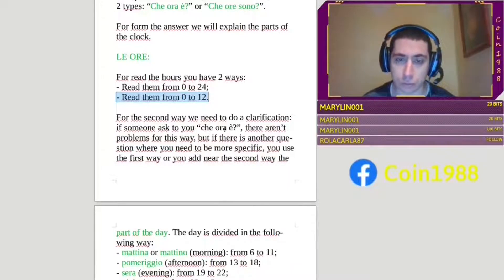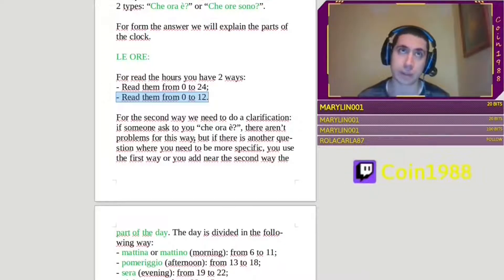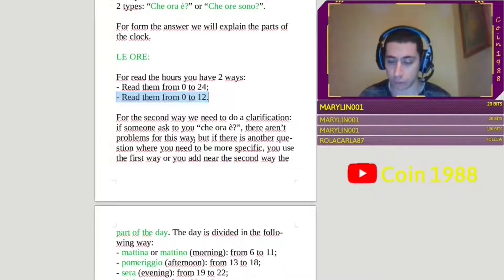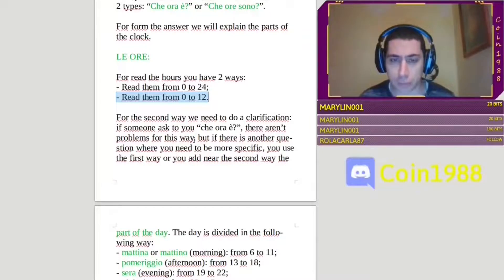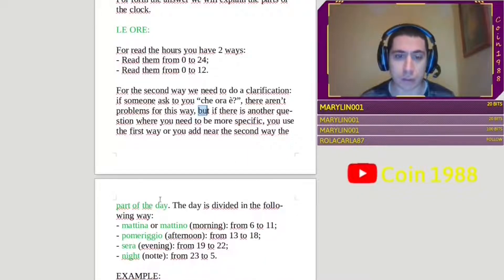If someone asks to you che ora è, there aren't problems for say this way, because you see the clock, that person that talk with you understand that if you say five o'clock, it is afternoon. He can think, oh, are the five of the morning? No, because he know in his mind if it is afternoon or morning or night. The problem, we can say there is, if there is another case. So, if there is another question, where you need to be more specific, you use the first way, or you add near the second way, the part of the day.